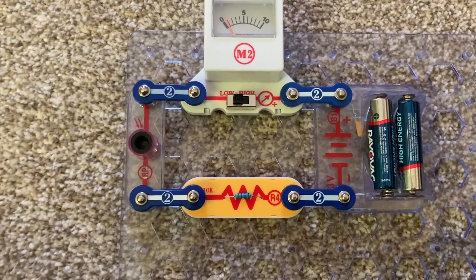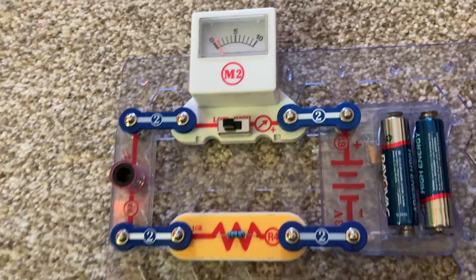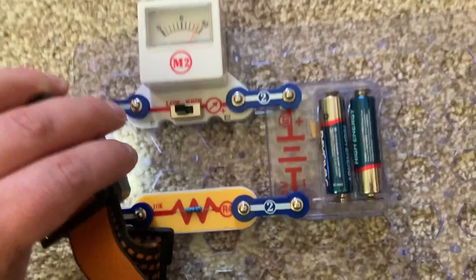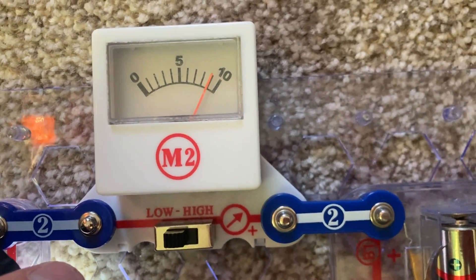So when I shine a bright light on it, you can see how much current flows through the circuit. Almost 9 milliamps.